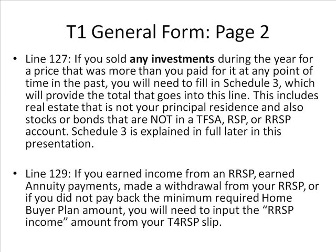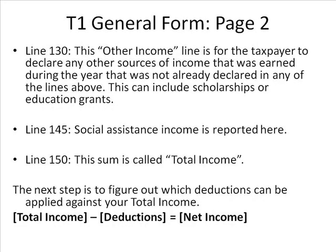Line 129: if you earned income from an RRSP, an annuity payment, made a withdrawal from your RRSP, or did not pay back the minimum required Home Buyer Plan amount, input the RRSP income amount from your T4RSP slip. Line 130: this other income line is for any other source of income not already declared, which can include scholarships or education grants. Line 145: social assistance income is reported here. Line 150: this sum is called the total income. The next step is to figure out which deductions can be applied against your total income — total income minus deductions equals net income.